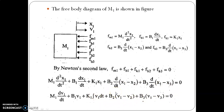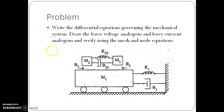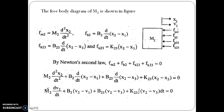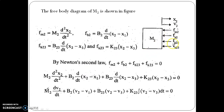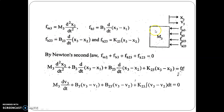Likewise, we write equations for m2 and m3. The free body diagram for m2 shows associated elements: m2, and opposing forces fm2, fk23, fb23, and fb2. The sum of these opposing forces equals zero, since there is no applied force.